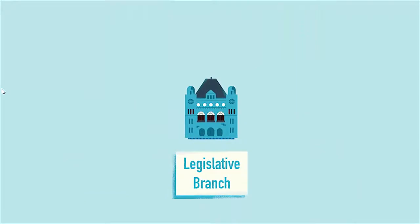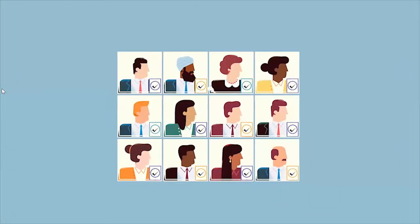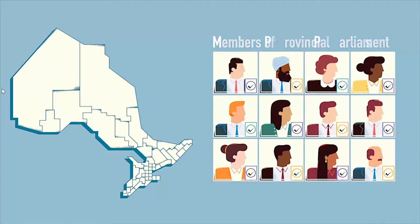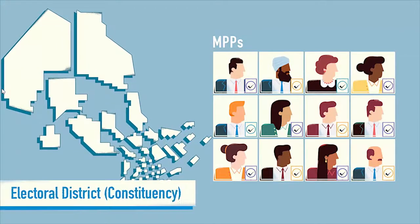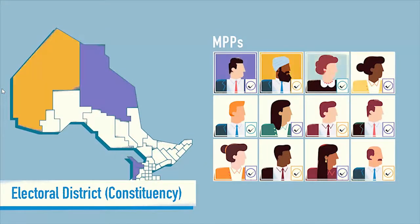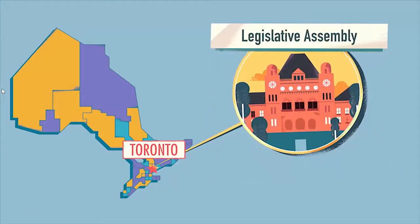First, there is the legislative branch, composed of all elected representatives. In Ontario, these elected individuals are called members of provincial parliament, or MPPs for short. Each MPP represents a different geographic area within Ontario, called an electoral district or constituency, and most are associated with a political party. MPPs convene at the Legislative Assembly in Toronto.